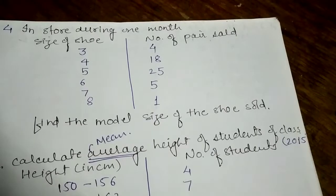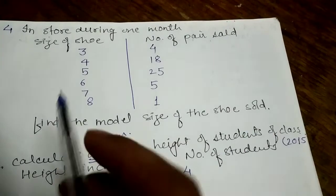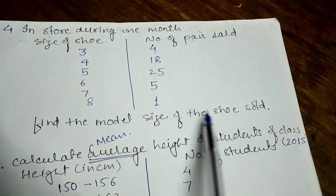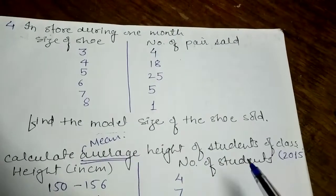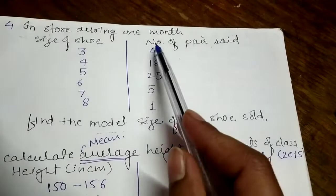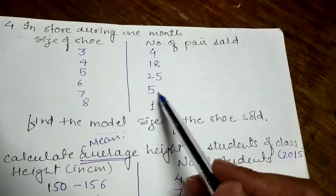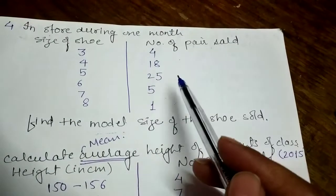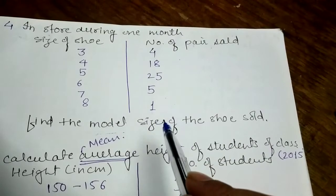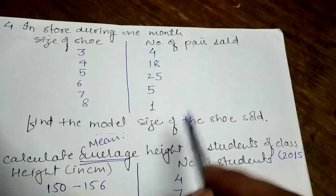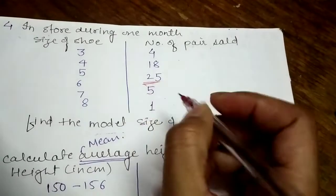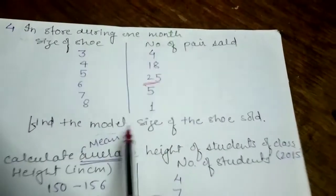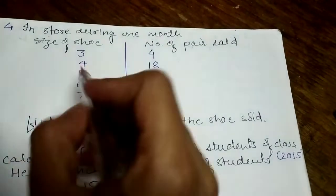Next question: during one month, the size of shoes sold is given. Find the modal size of the shoe sold. For the modal class, you have to find the most frequently sold shoe. There are 25 shoes sold at one size. The modal size is 5.